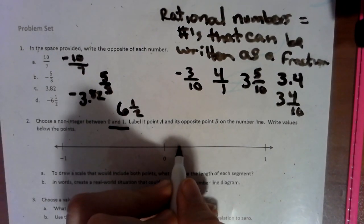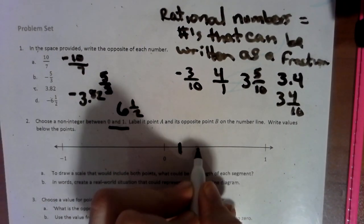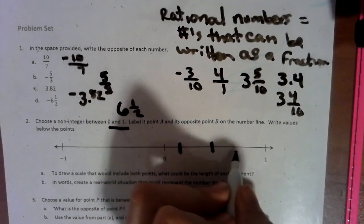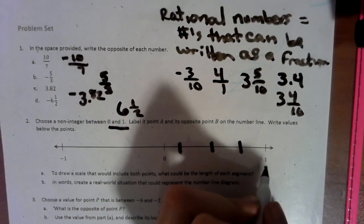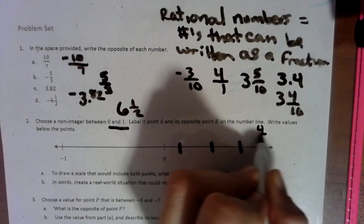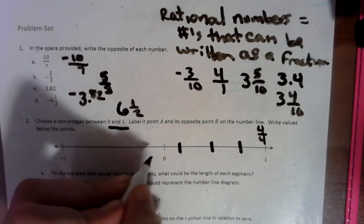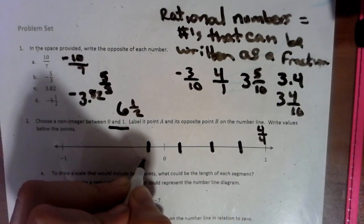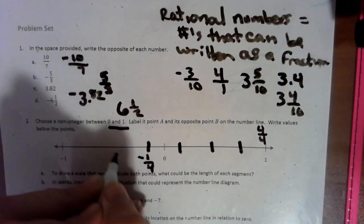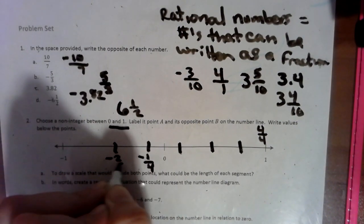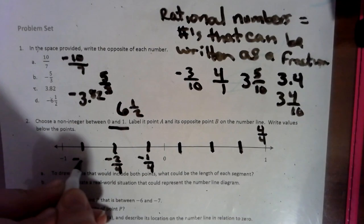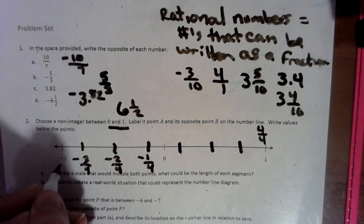Let's do a fourth. So we would have zero, one-fourth, two-fourths, three-fourths, four-fourths, which is your whole one. And then we would have negative one-fourth, negative two-fourths, which is a half, negative three-fourths, negative four-fourths.